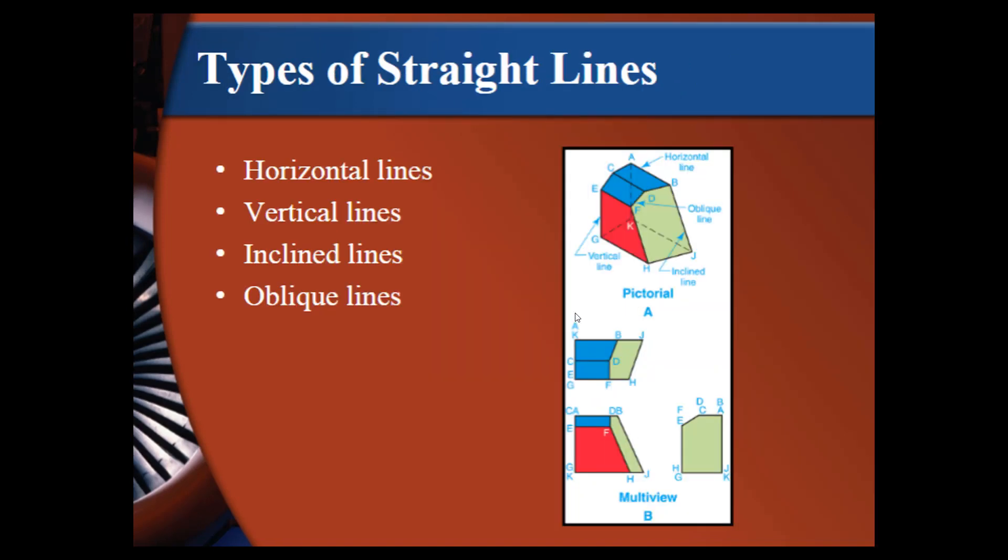Types of straight lines. We have horizontal lines, we have vertical lines, we have incline lines and we have oblique lines. Horizontal lines, that's obvious what a horizontal line is. If we look on this diagram, this surface here is a horizontal line. We also have vertical lines and if we look here, that is going to be a vertical surface.